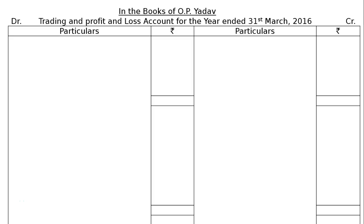The question is: from the following trial balance of Sri O.P. Yadav, prepare his final accounts for the year ended 31st March 2016. We have to start from the credit side and write down in the books of O.P. Yadav, draw the trading and profit and loss account for the year ended 31st March 2016.